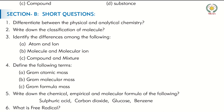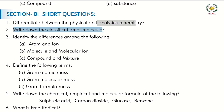For homework, you have to answer questions 1 and 2. You need to differentiate between physical and analytical chemistry — write the definition of physical chemistry, then the definition of analytical chemistry. Then write the classification of molecules: give the definition of a molecule, then explain how molecules are classified into types, with headings.